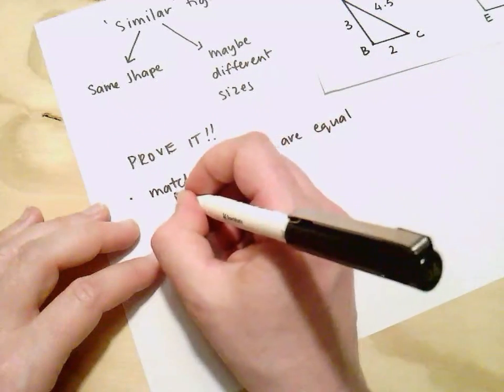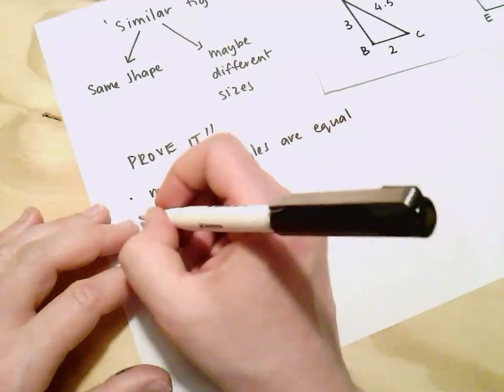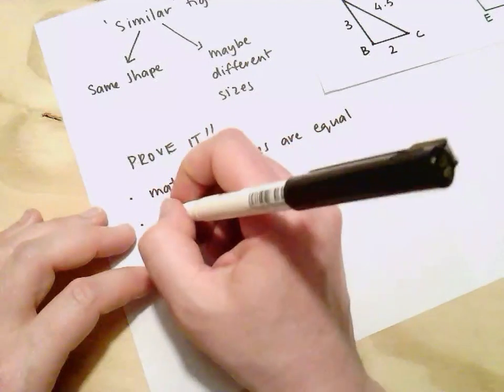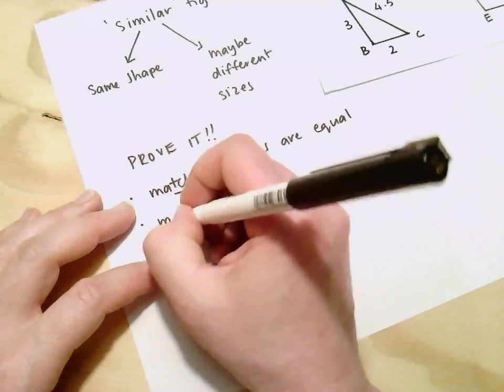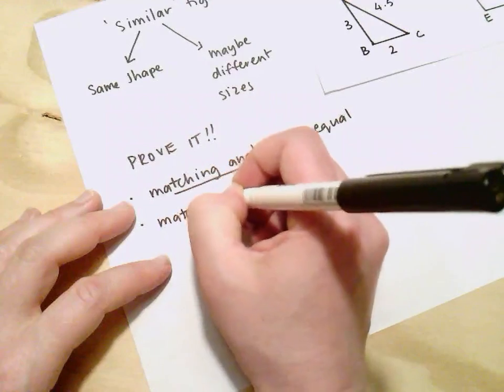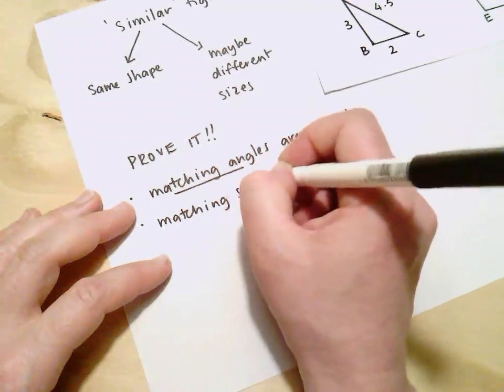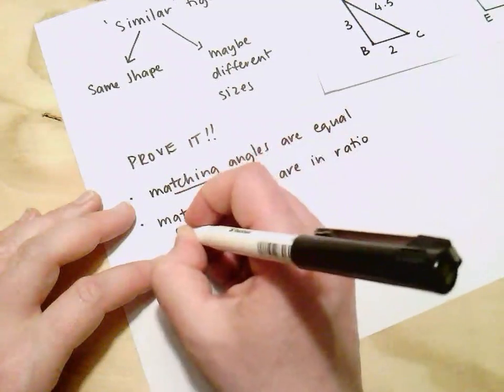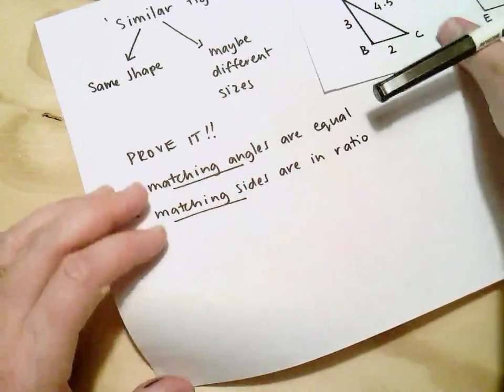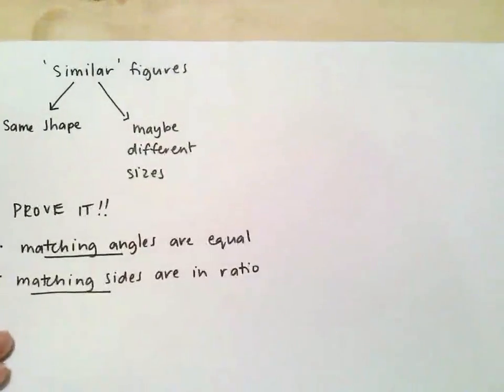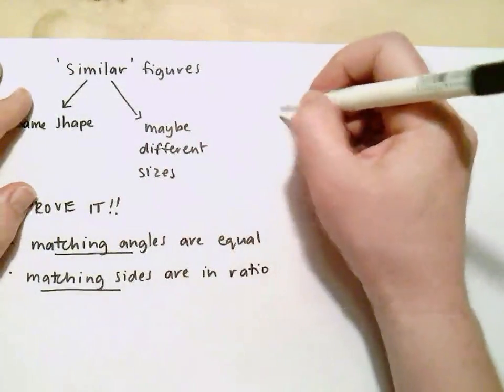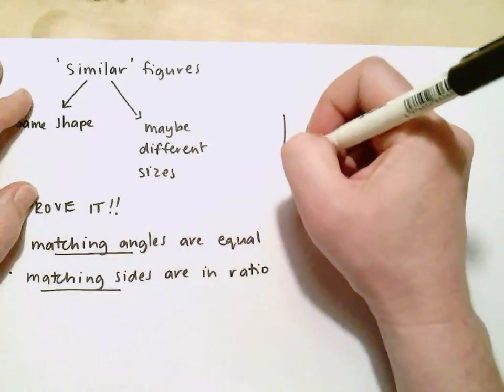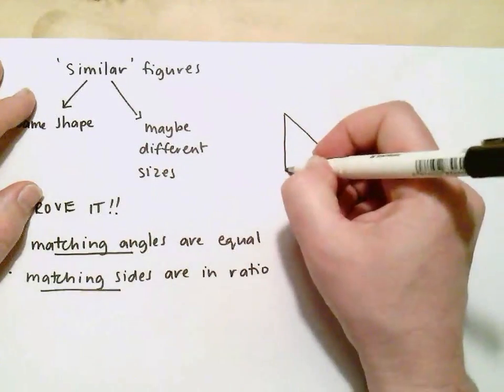And I'll talk about what I mean by matching angles in just a moment. The other option is that we can show that the matching sides are in ratio. So what do I mean by these matching angles and matching sides? Let me just draw another couple of triangles. These ones aren't quite as precisely drawn obviously.